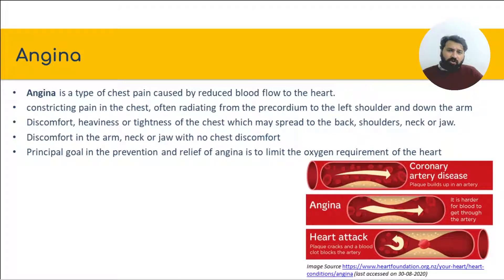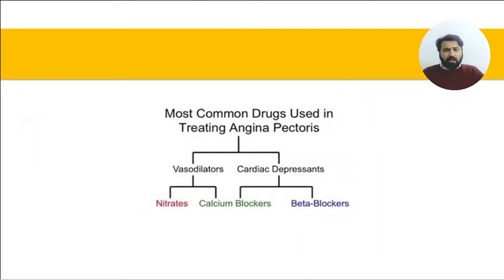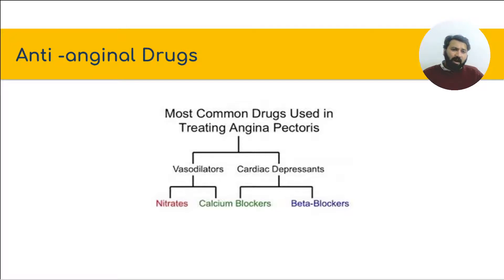There are several compounds used as anti-anginal drugs. From the diagram, we can see coronary artery disease with plaque buildup in the artery causing angina — making it harder for blood to get through — while in a heart attack, the plaque cracks and a blood clot blocks the artery entirely. The most common anti-anginal drugs are vasodilators and cardiac depressants. Calcium channel blockers work as both vasodilators and cardiac depressants, nitrates work as vasodilators, and beta blockers work as cardiac depressants.